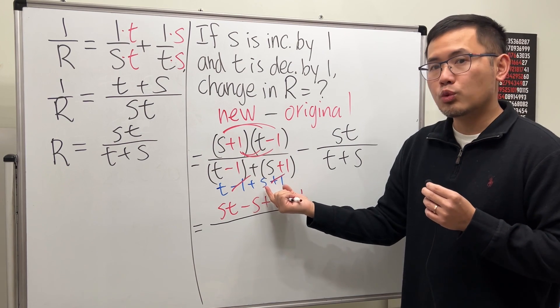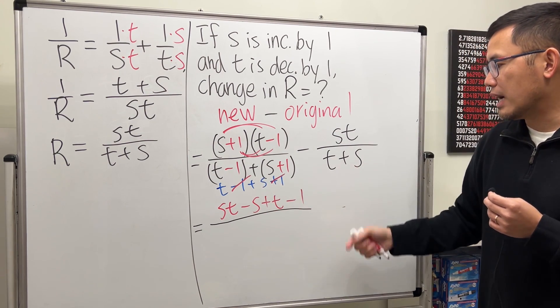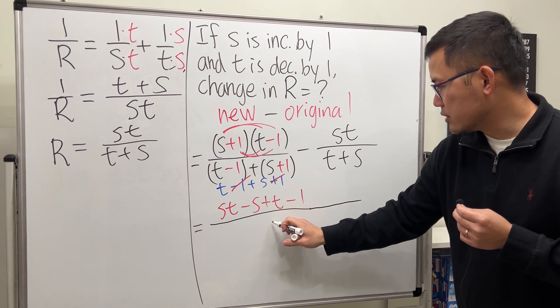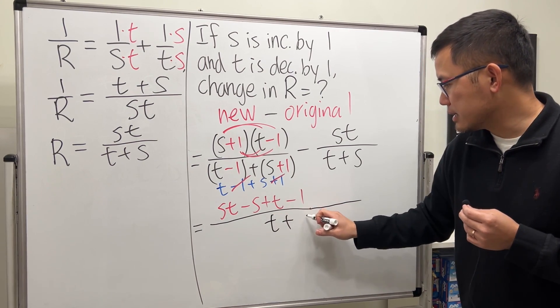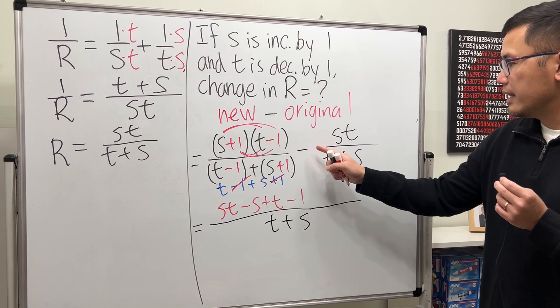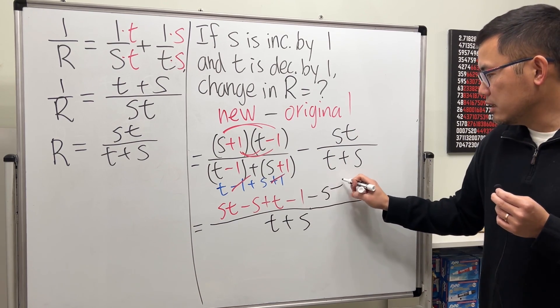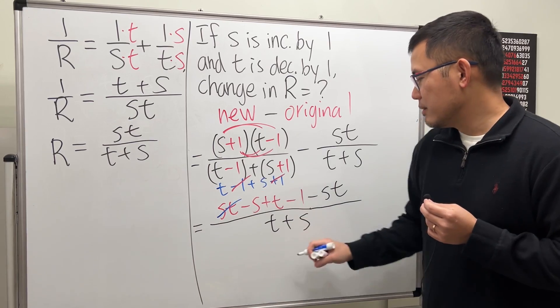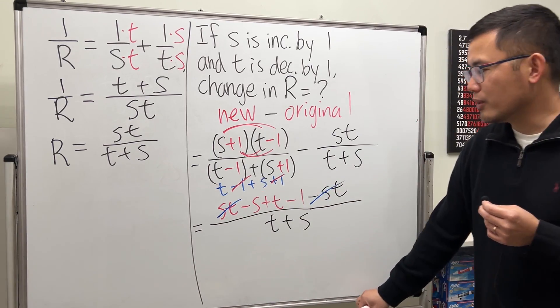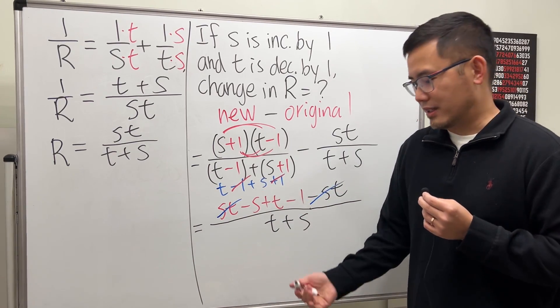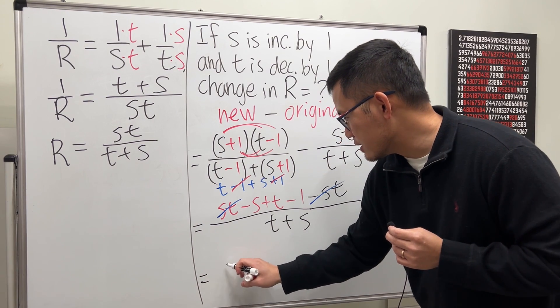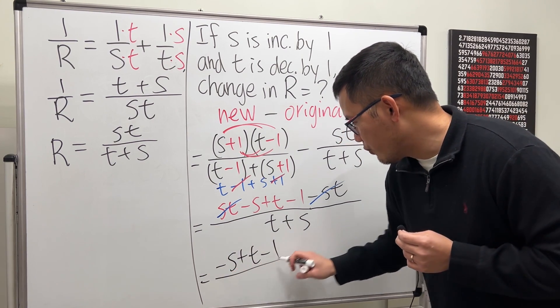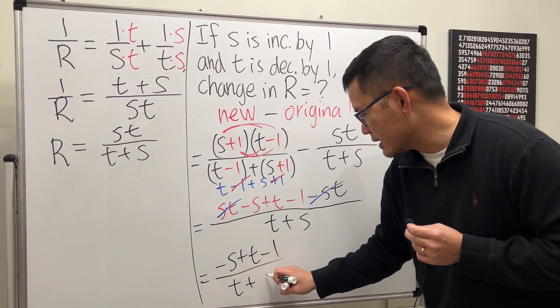We can put this in a big fraction with T plus S as the denominator. We have ST minus S plus T minus one, minus ST in the numerator. ST minus ST cancel, and the rest is just the answer. The final answer is negative S plus T minus one over T plus S.